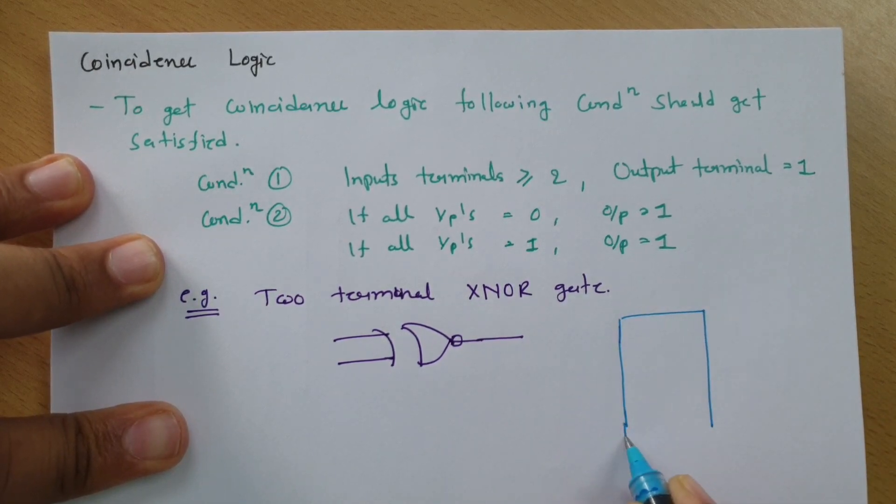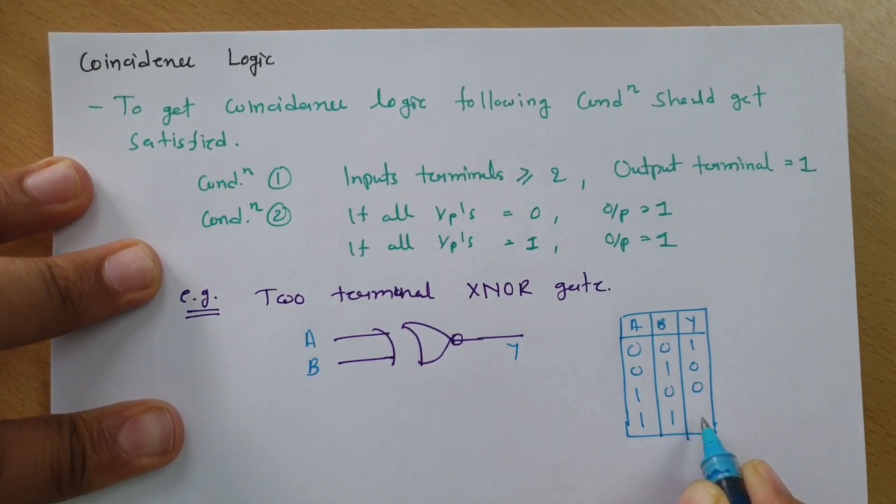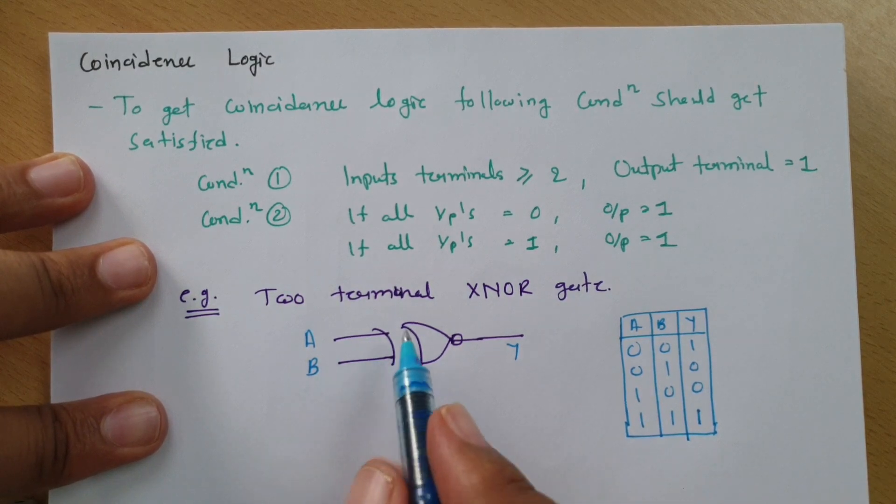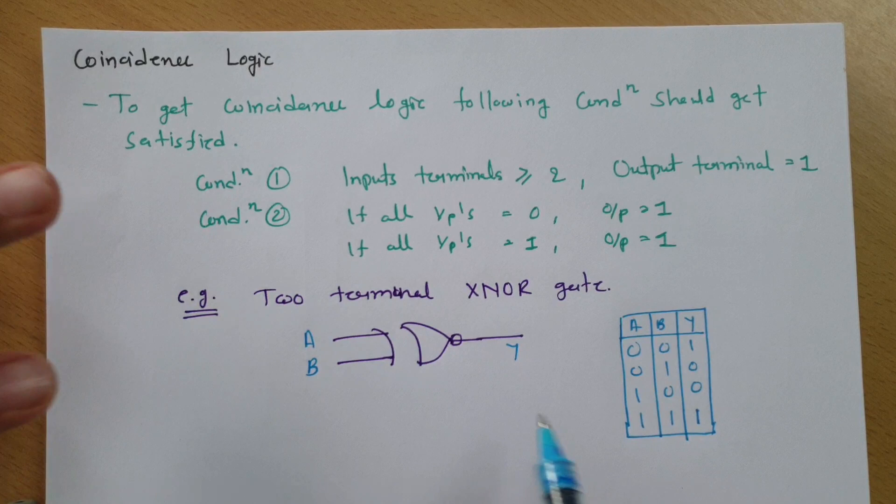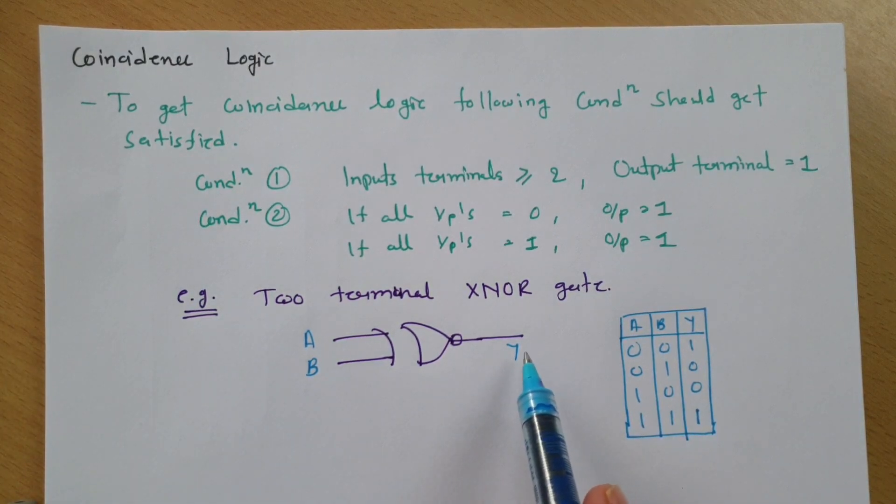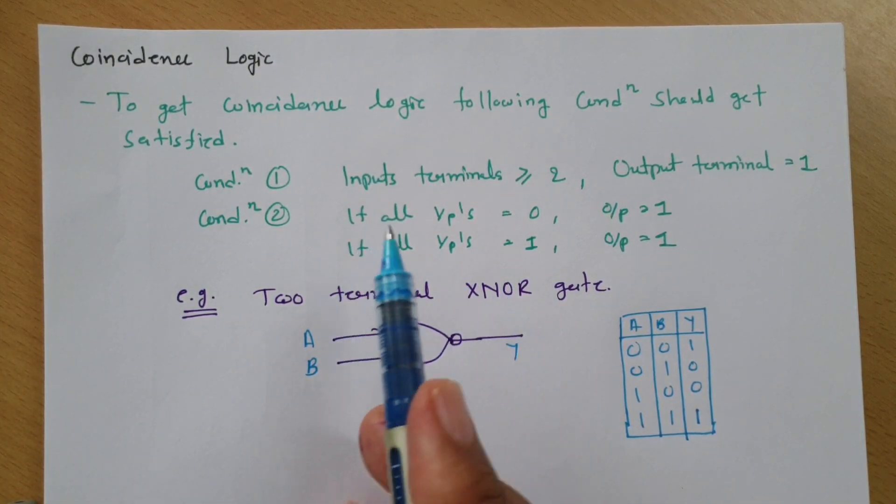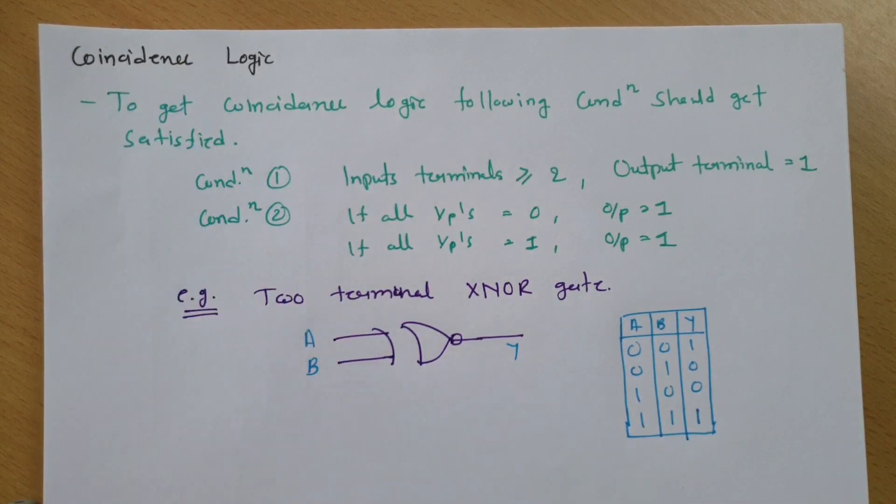If you see the XNOR gate's truth table, you observe that when both inputs are zero, output is one. When both inputs are one, output is one. This means XNOR gate is coincidence logic.